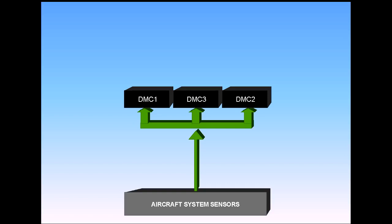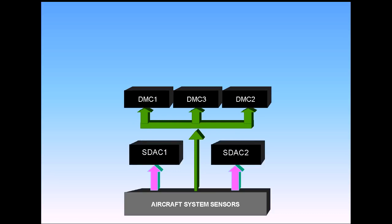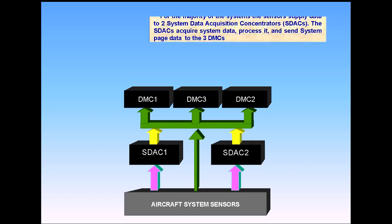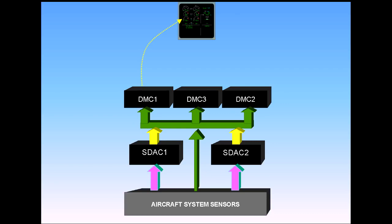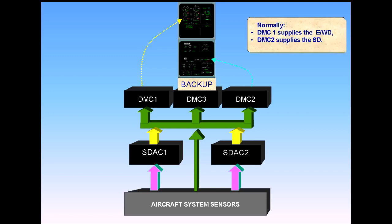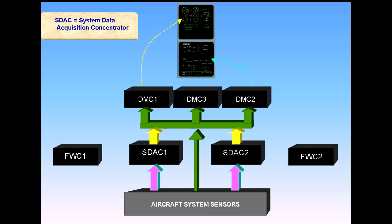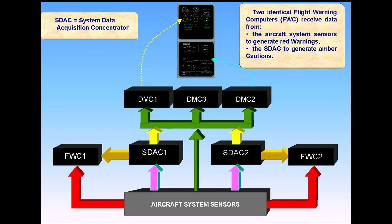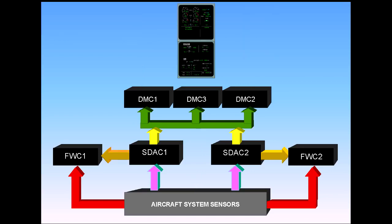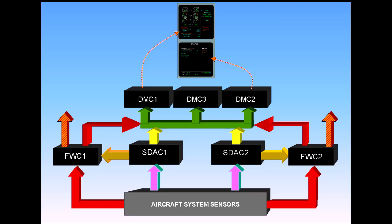For the majority of systems, the sensors supply data to two Systems Data Acquisition Concentrators, SDACs. The SDACs acquire system data, process it, and send system page data to the three DMCs. Normally, DMC-1 supplies the engine warning display, and DMC-2 supplies the SD, the system display. Two identical flight warning computers, FWCs, receive data from the aircraft system sensors to generate red warnings, and the SDACs generate amber cautions. The FWCs then supply the DMCs for the display of alert messages, the attention-getters, the loudspeakers for aural alerts, and synthetic voice messages.